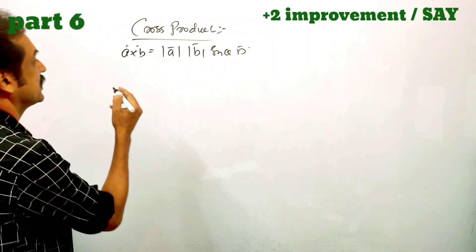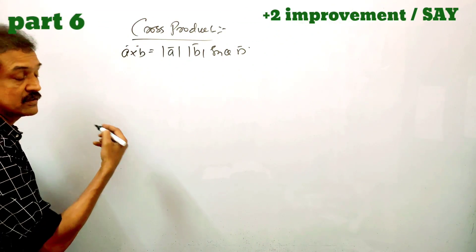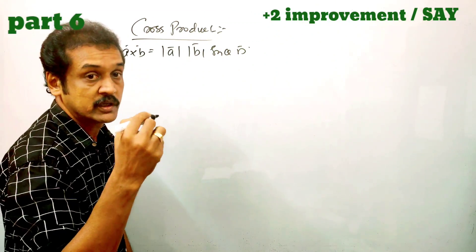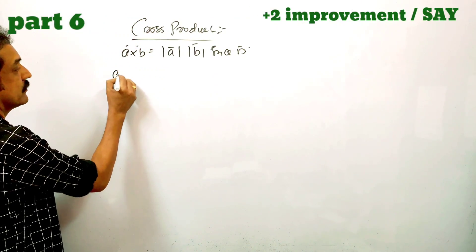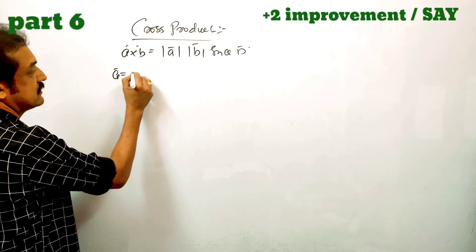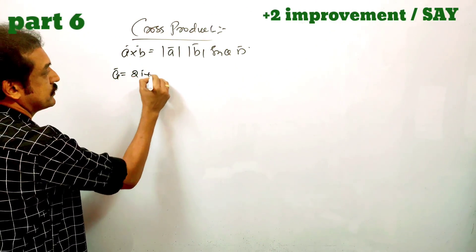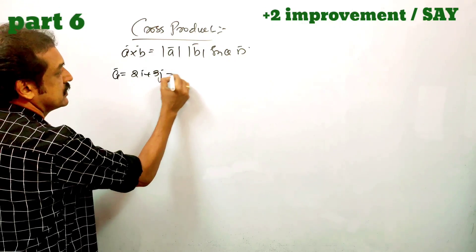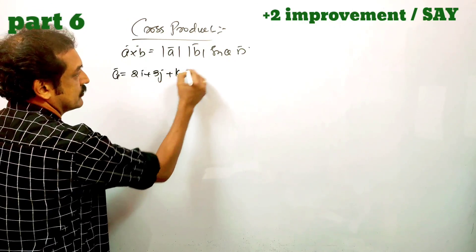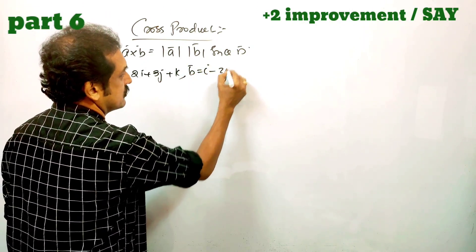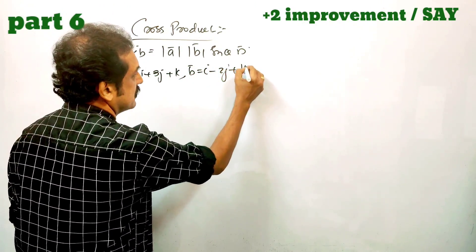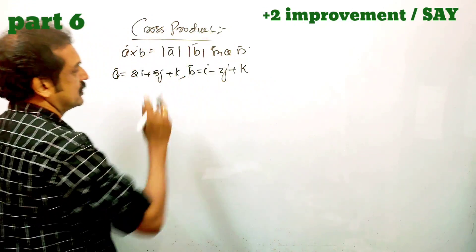Next, let's try the cross product example. A is equal to 2i plus 3j plus k. B is equal to i minus 2j plus k.